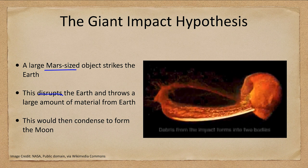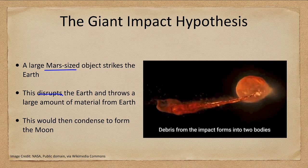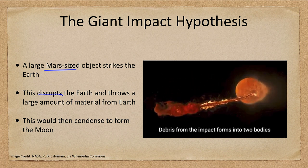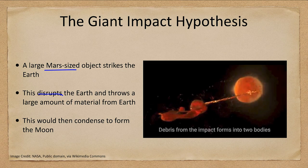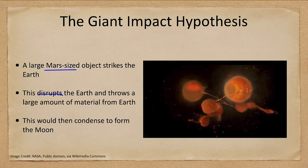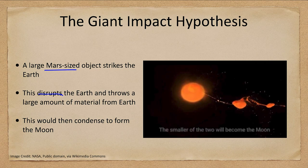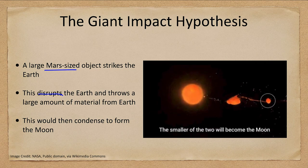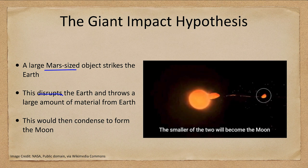A lot of the material would have fallen back to Earth, but what left Earth would have been material that was mostly crust and mantle. The cores would have collided together, and then the other material would fall back to Earth or be dispersed.